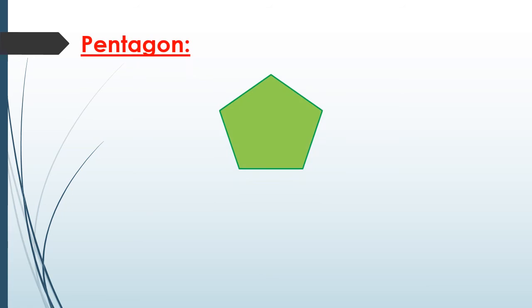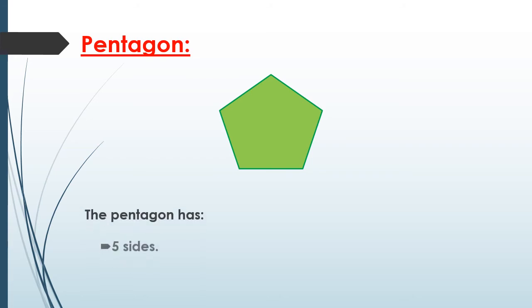This shape is called a pentagon. The pentagon has five sides and five vertices.